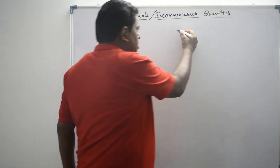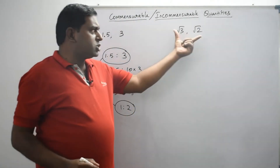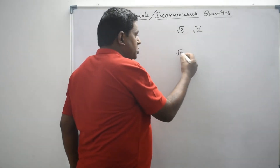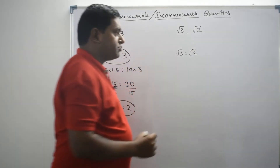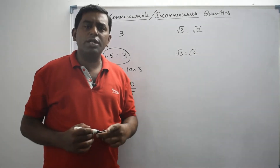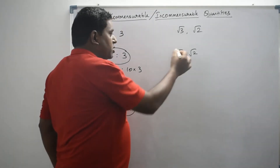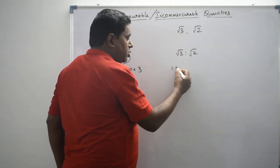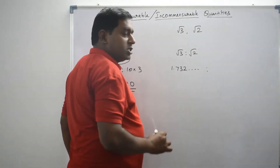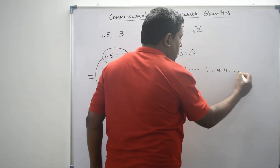Let's look at another example: square root of 3 and square root of 2. Can we say these two quantities are commensurable? Let's verify. First, I write the ratio: square root of 3 is to square root of 2. Both are irrational numbers. Using a calculator, square root of 3 is approximately 1.732 and square root of 2 is approximately 1.414, and both keep going.